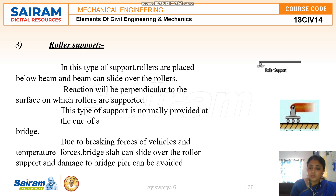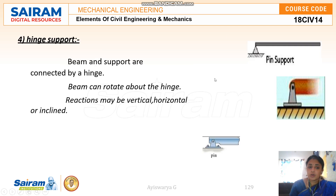Why is roller support needed? Because in a bridge, there are many vehicles and the bridge slab can slide from one support to another. In order to avoid damage, roller support has been provided in bridges. Now, the next one is a hinged support. A very good example for hinged support is a door, where we can see hinges at the end. In the hinged support, beams and supports are connected by the hinge. The beam can rotate about the hinge. Reactions may be vertical, horizontal, or inclined. For the hinged support, you will get one vertical reaction and one horizontal reaction — this is also called a pinned support.